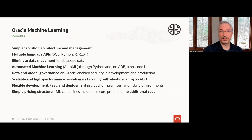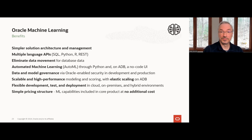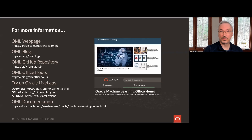To wrap up, here are just a few of the benefits users get when using Oracle Machine Learning: simpler solution architecture and management, multiple language APIs, minimizing or eliminating data movement, AutoML, data and model governance, scalability, and flexible development and deployment options covering cloud, on-premises, or hybrid environments. OML's pricing structure is also simple — the available OML features are included with the core product at no additional cost. For more information on Oracle Machine Learning and to get started, check out these resources, and to try OML on Autonomous Database, check out the Oracle LiveLabs workshops, including OML Fundamentals, which covers several of the components we've discussed. Thanks for learning about OML!